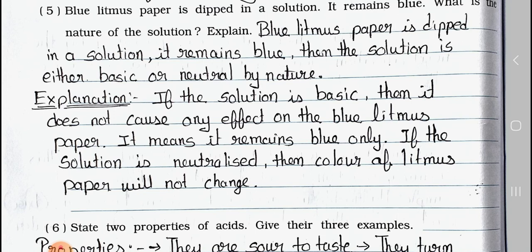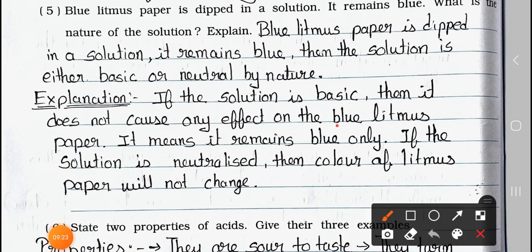Explanation: If the solution is basic, then it does not cause any effect on the blue litmus. There is no effect on blue litmus paper and it remains blue only. If the solution is neutral, then the color of litmus paper will not change, meaning it remains neutral and the color is not changed.